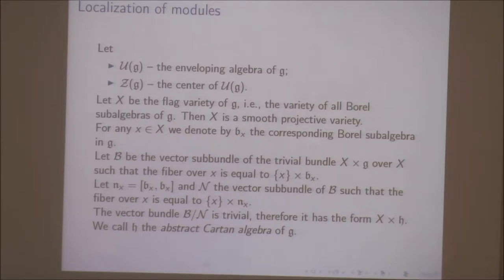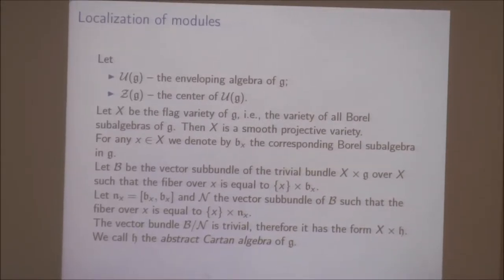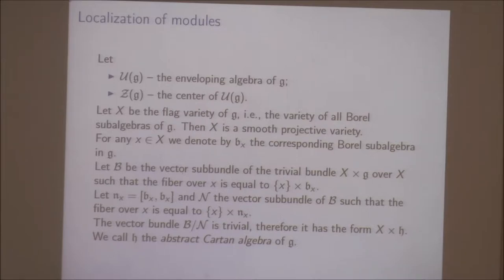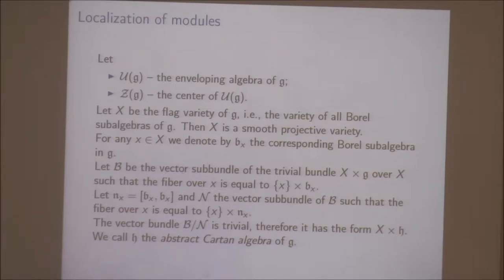The first thing I have to discuss briefly is D-modules and their relation to representation theory — the localization of D-modules and representations, which Wilfred will have to talk about at some point. I will denote by U(G) the enveloping algebra of G, Z(G) is the center of U(G), which Wilfred discussed today, and X will be the flag variety of G — that is, the variety of all Borel subalgebras of G, considered as an algebraic variety with the Zariski topology. I will be doing all of this in the algebraic category, which is very important for further development.